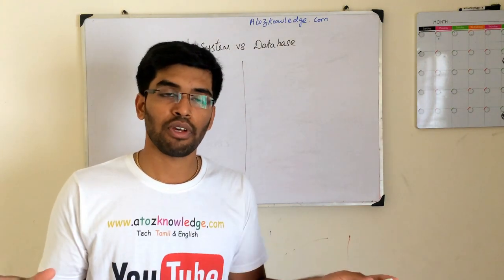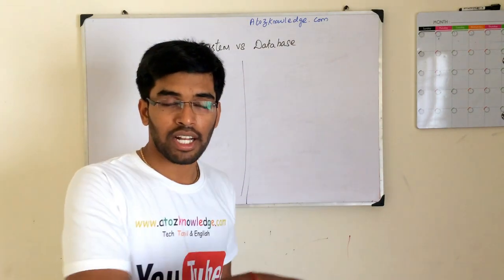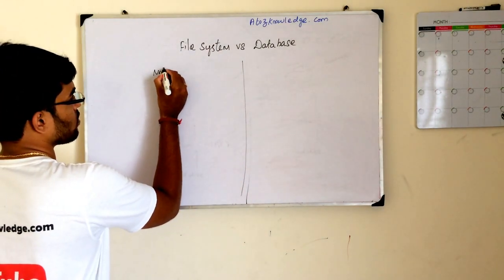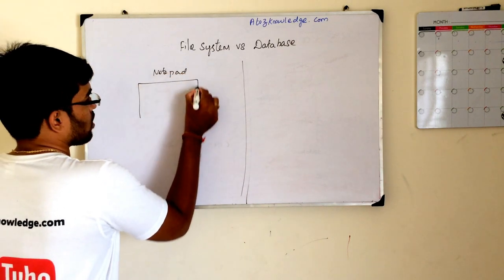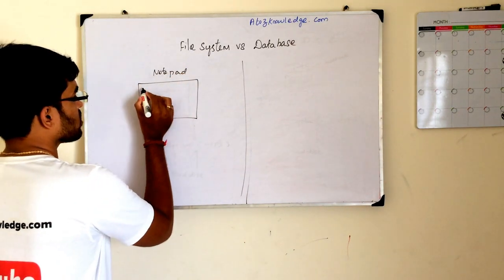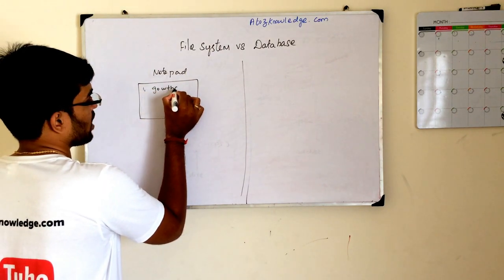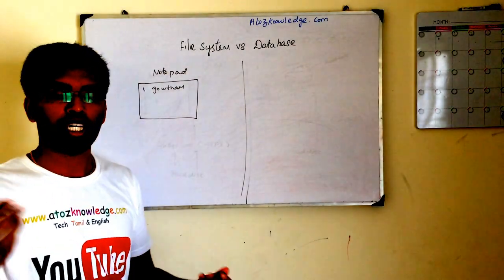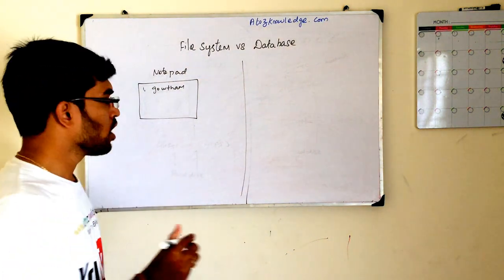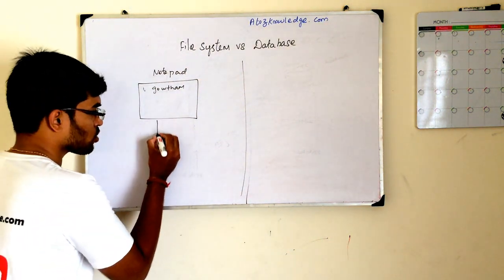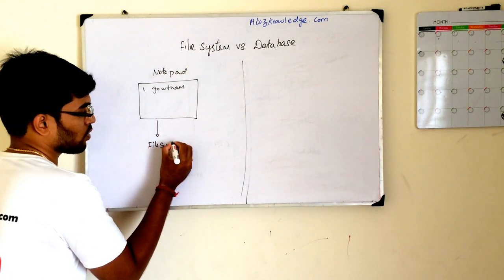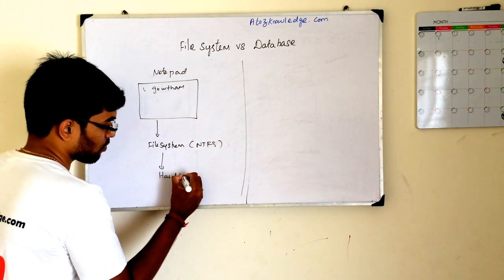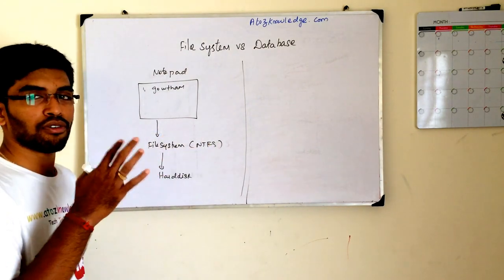Take file system: any application you run on top of Windows runs on top of your file system — it can be Notepad, Word, VLC Media Player, or even a database. So I open Notepad and I type something like '1, Gautam' — my name — and I save this file somewhere, like on the E, F, D, or C drive, or even on the desktop. When this file gets stored, it first goes to your file system, which is NTFS.